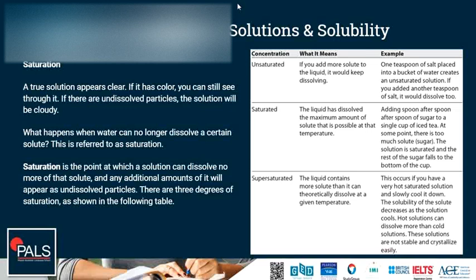There are three degrees of saturation. An unsaturated solution: we can still add more solute and it will keep dissolving — for example, one teaspoon of salt placed into a bucket of water; if you add another teaspoon, it would still dissolve. A saturated solution: the liquid has dissolved the maximum amount of solute possible at that temperature — for example, adding spoon after spoon of sugar to iced tea until no more sugar dissolves and the rest falls to the bottom.